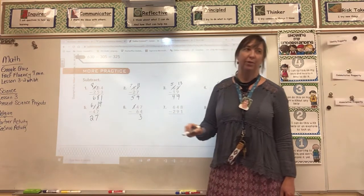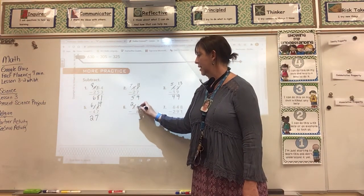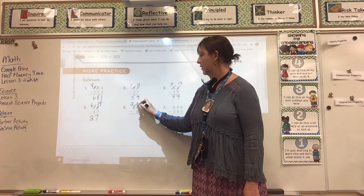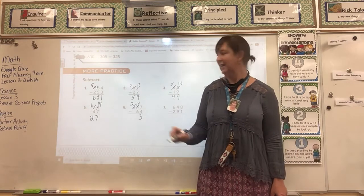And now I have to regroup here because 6 is bigger than 4. I cross out this 3 in my hundreds place and I make it a 2. This becomes 14. 14 minus 6 is 8.